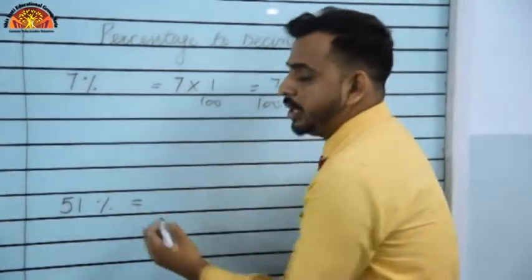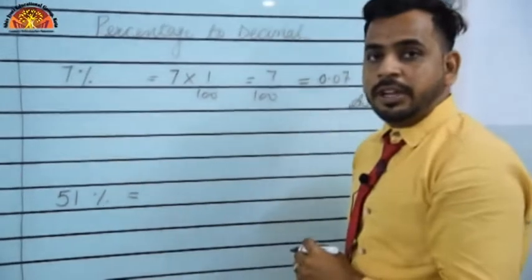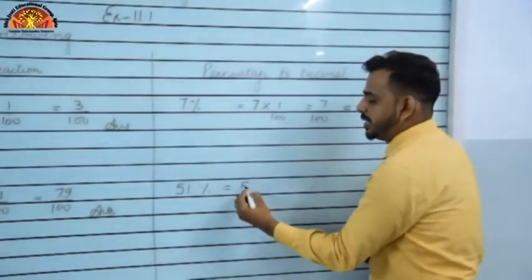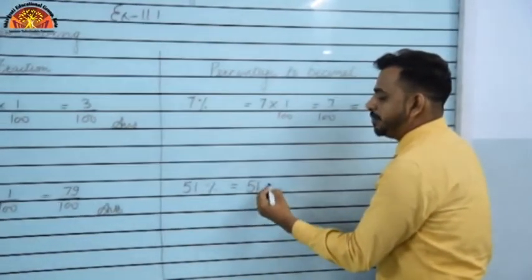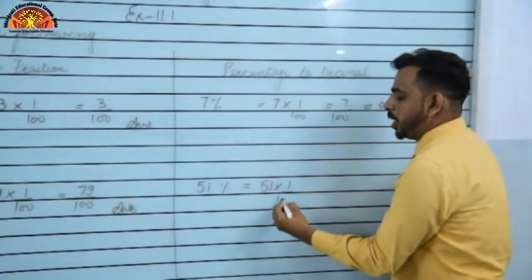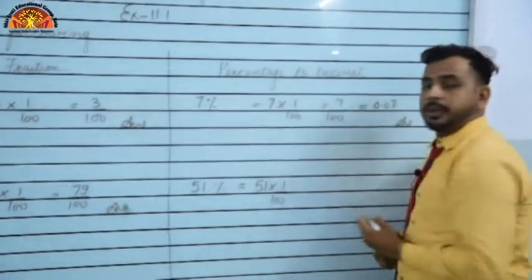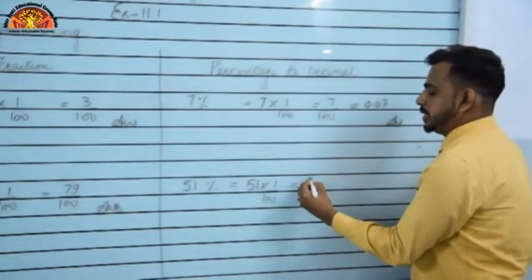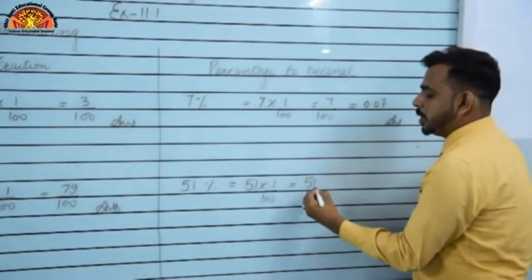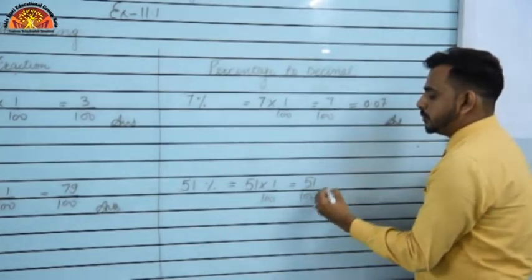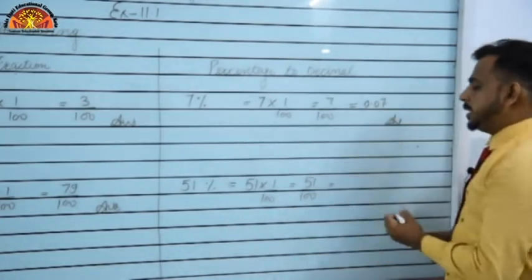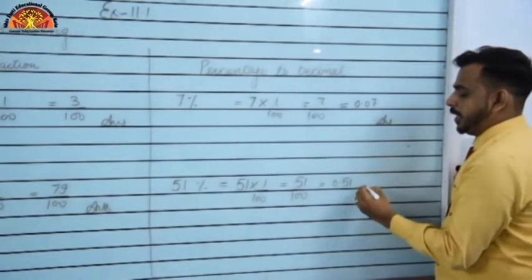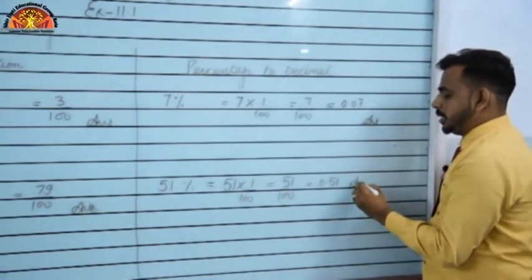Another example: 51%. Remove the percentage sign and multiply by 1/100 → 51 × 1/100 = 51/100 = 0.51. This is the answer.